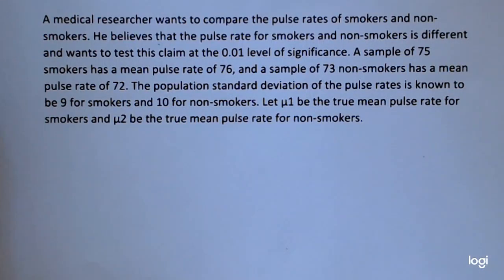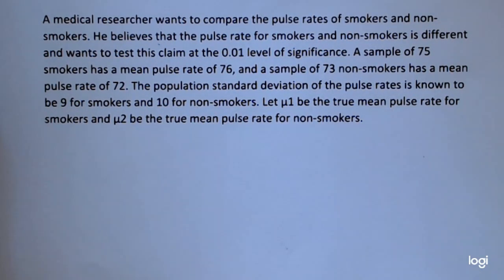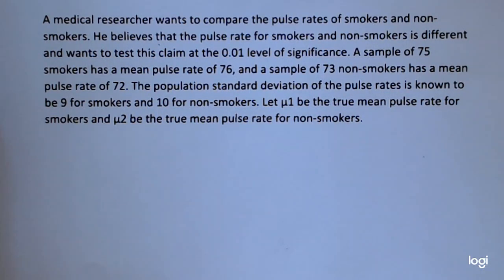This video is an example of a hypothesis test between two means for independent samples when both population standard deviations are known. A medical researcher wants to compare the pulse rates of smokers and non-smokers. He believes that the pulse rate for smokers and non-smokers is different and wants to test this claim at the .01 level of significance.